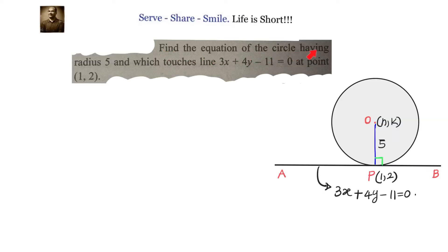Find the equation of the circle having radius 5 and which touches the line 3x plus 4y minus 11 equals to 0 at point (1, 2).